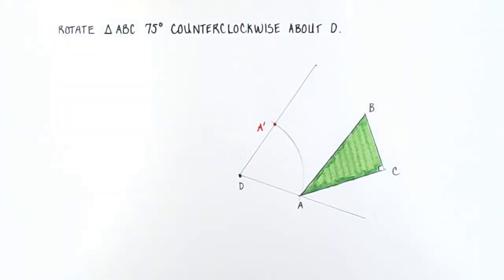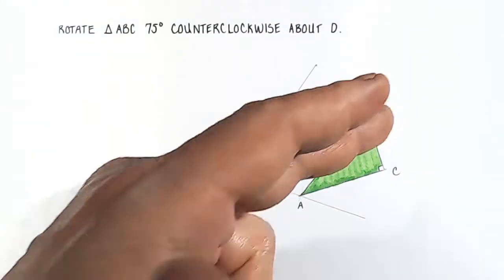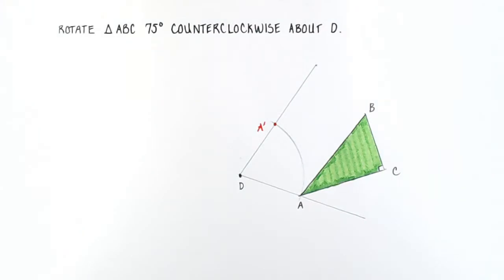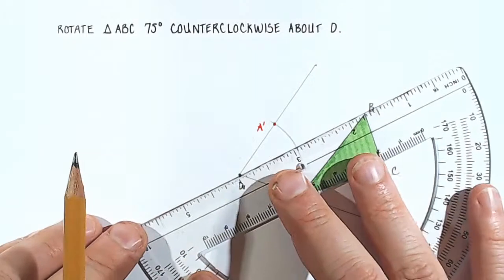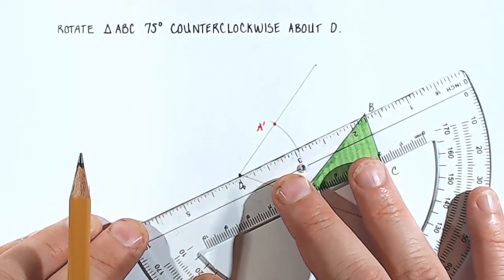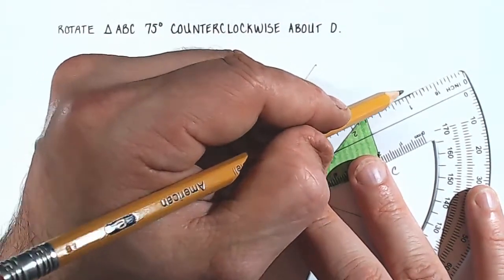Okay, point A prime has been found. And now we need to find point B prime. So what we're going to do is draw a line passing through D and B, like this.